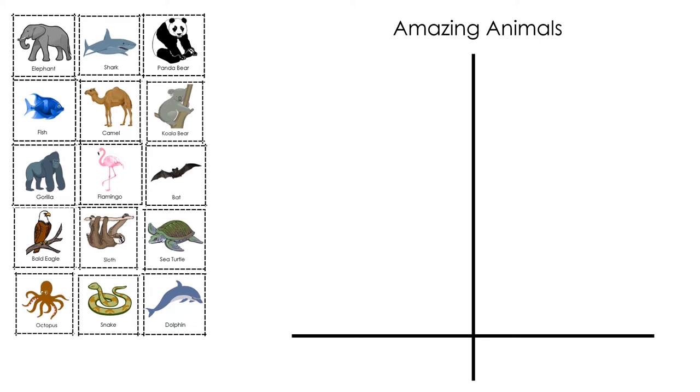One way I notice is that some of the animals live in the water. Let's sort and classify the animals into two categories: animals that live in the water and animals that do not live in the water. I can move the cards in a way that groups them and lets me see more clearly how they are similar and different from one another.